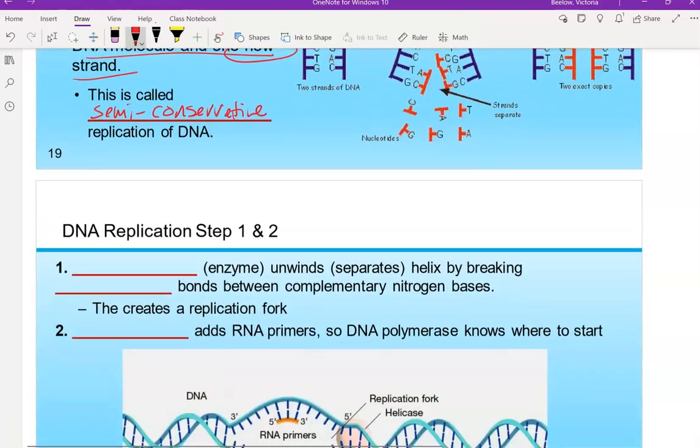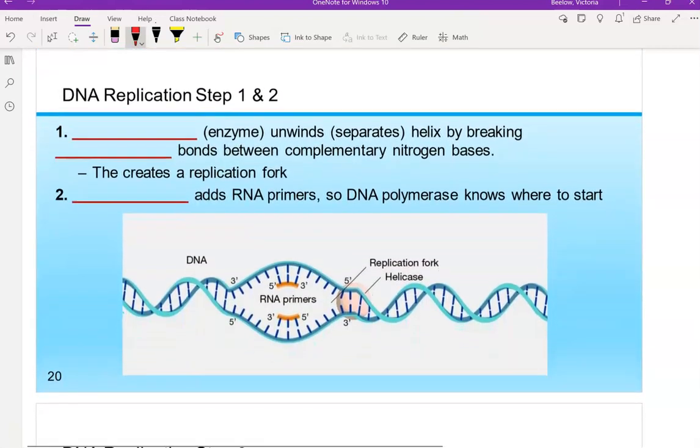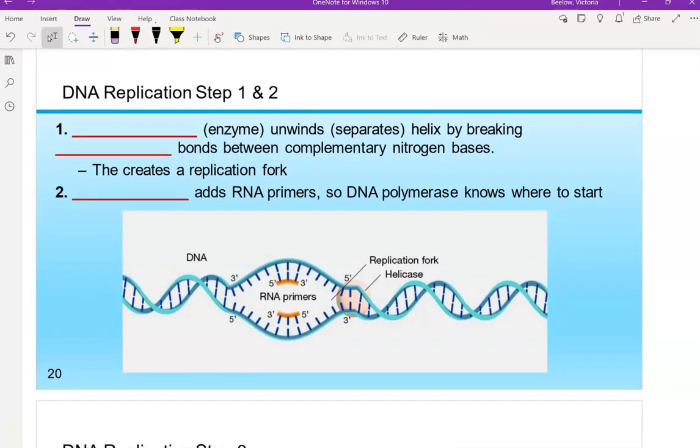So here is the process. This is me breaking it down into four simple steps. Depending if you watch other videos or things like that, it might not always be talked about in this exact order. But this is the order in which I'm going to talk about things. So the first thing that we have to do is we have to unwind or unzip DNA. So you can see that here, the section of DNA, we've kind of split it in half. And to do this, we use an enzyme called helicase.